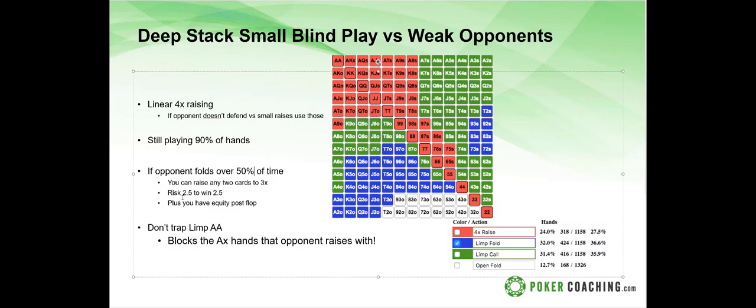Even when they call exactly 50 percent of the time, you'll still win the pot with jack-five offsuit about 20 percent of the time. Against really tight opponents, you can expand your raising range even further — in some cases raising 100 percent of hands from the small blind if they fold way too much, because you're instantly making money.